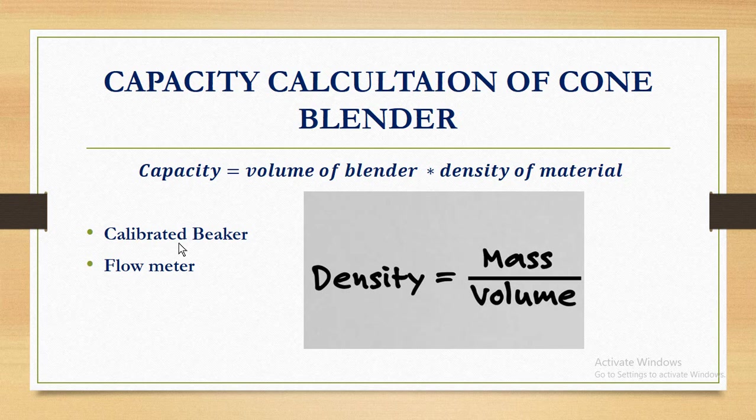This is why when you talk about any blender in general terms, you describe it in liters. This blender is 1000 liters, this blender is 500 liters. In liters, the capacity is fixed. But in kilograms, the capacity depends on the mix of the product — if the density of the product is more or less, the volume and quantity compared to the blender will change accordingly.